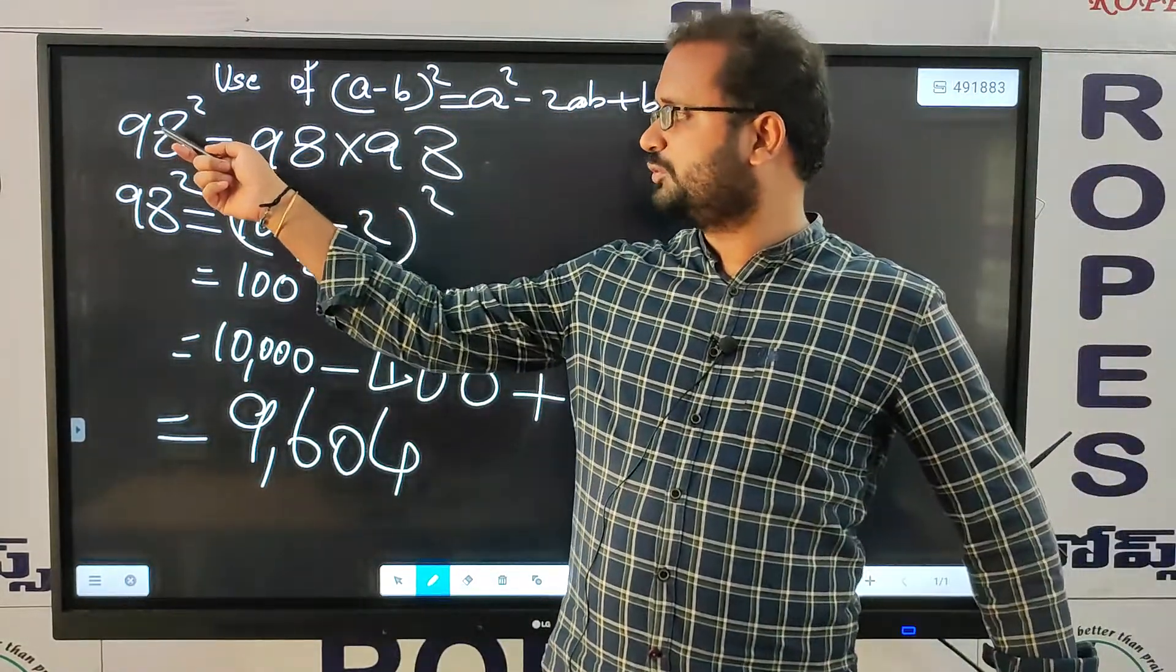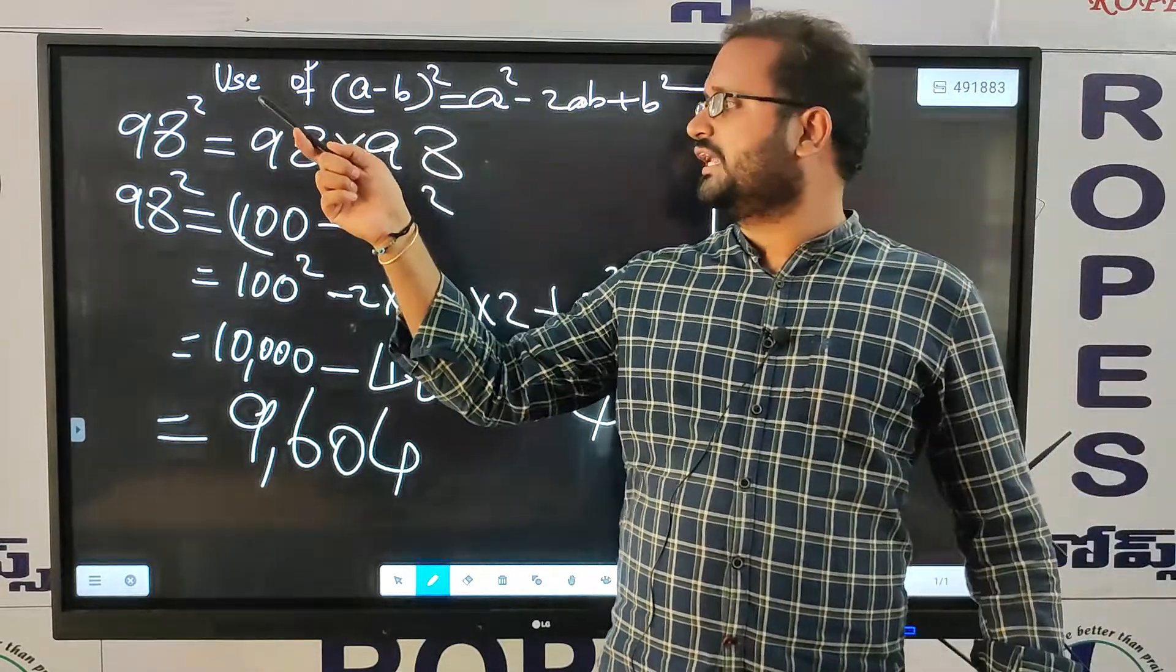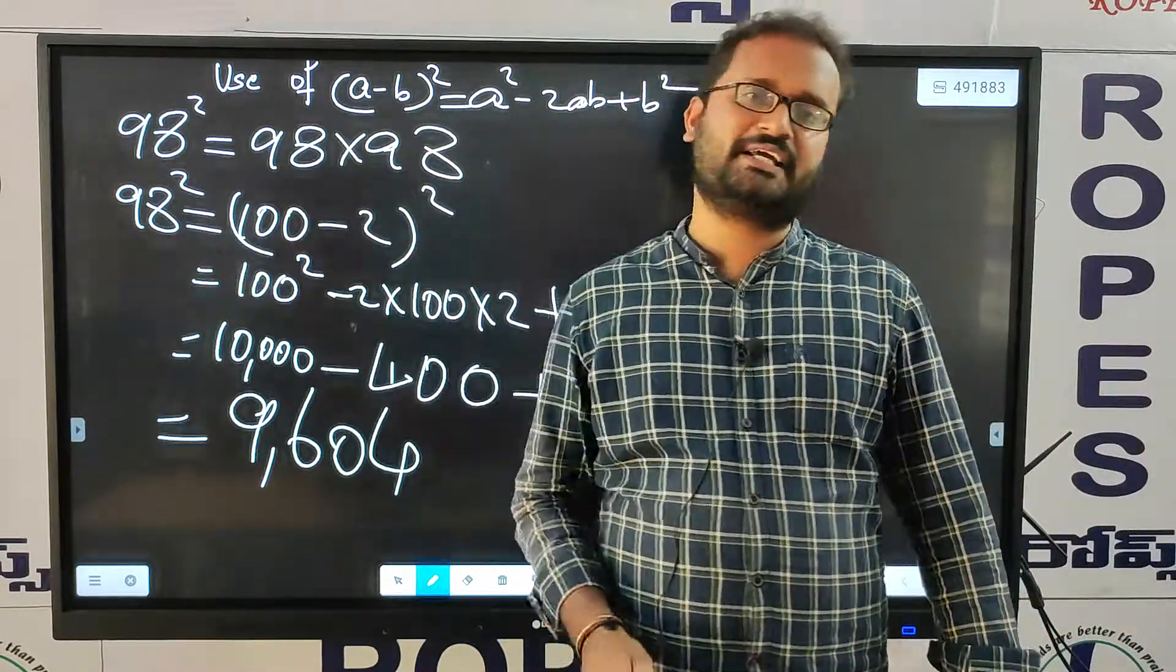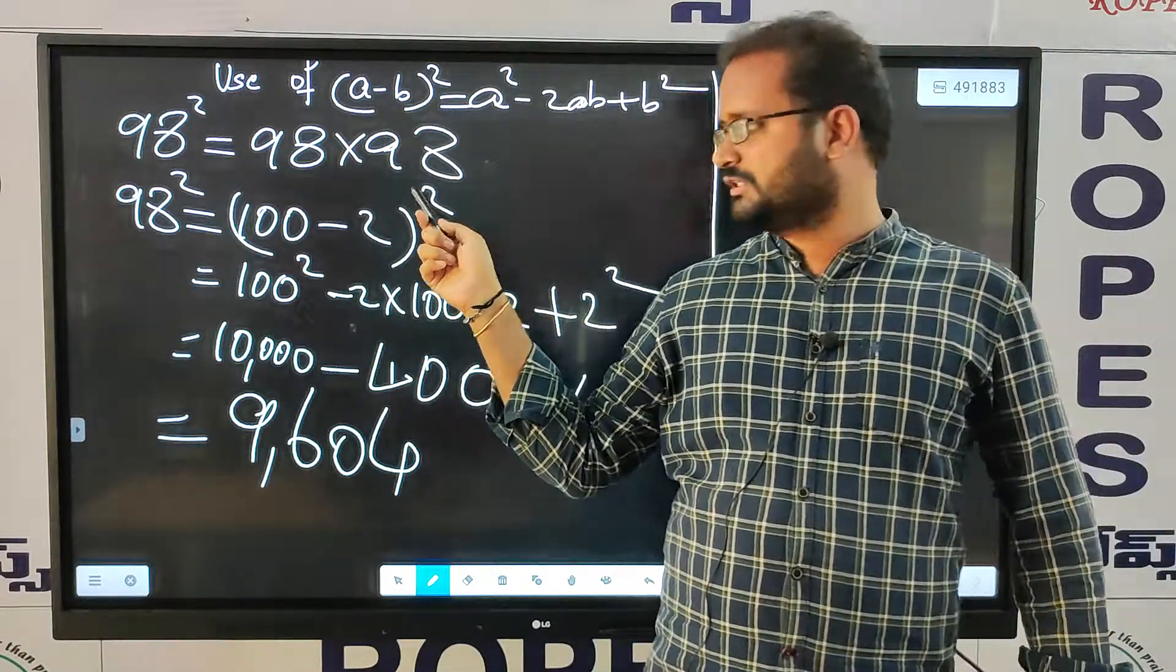Here we need to find the value of 98 square. 98 square, that is 98 into 98. We can observe that 98 is nearest to 100. So 100 minus 2, that is whole square.